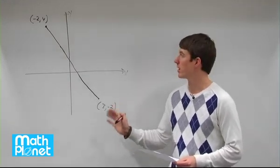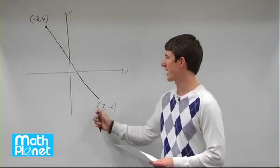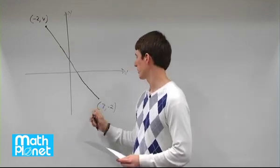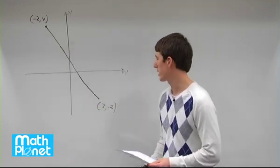Here we have a segment of a line on a coordinate grid, and we just want to find the length of this line, this distance here between these two points, negative 2, 4, and 3, negative 2.